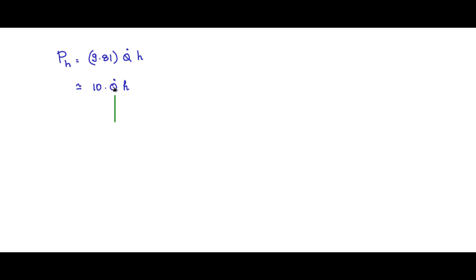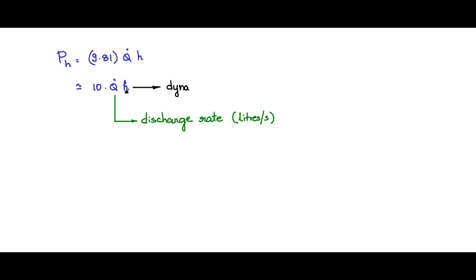The discharge rate or flow rate q̇ is obtained from the application — specifically, how many liters of water you need to transfer from the lower level to the higher level, or how many liters are required for irrigating a given piece of land. This value comes from the user requirement. H is the total dynamic head in meters, which is a combination of the suction head, the discharge or delivery head, and an equivalent head representing friction losses in the pipe. Estimating these heads allows you to calculate the power requirement for the application.